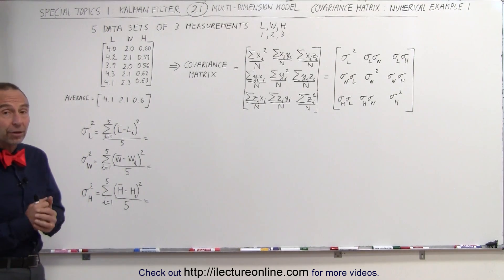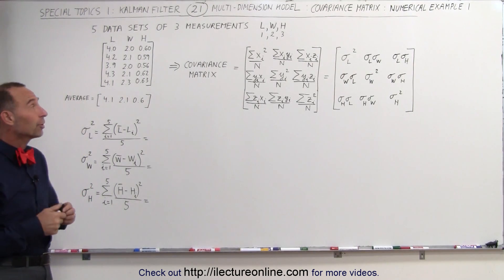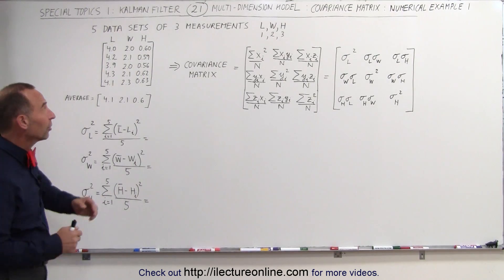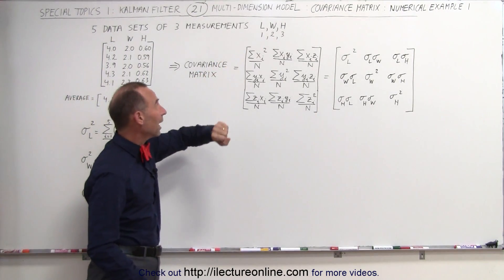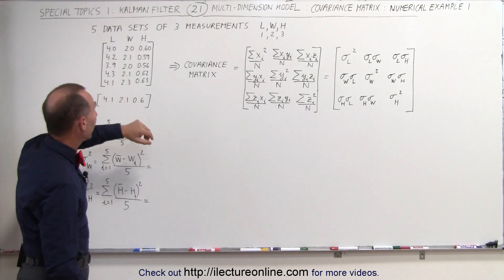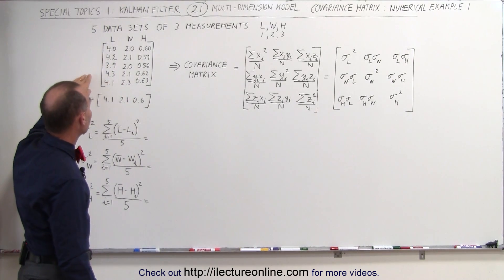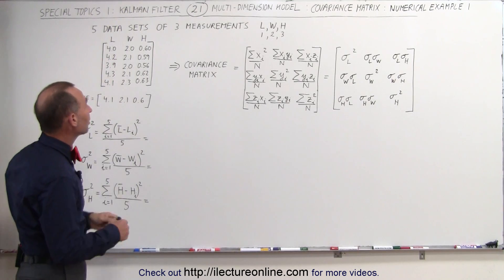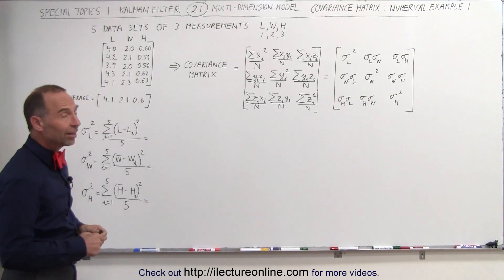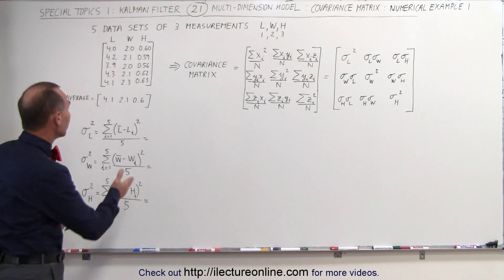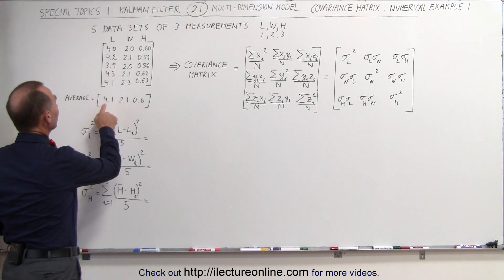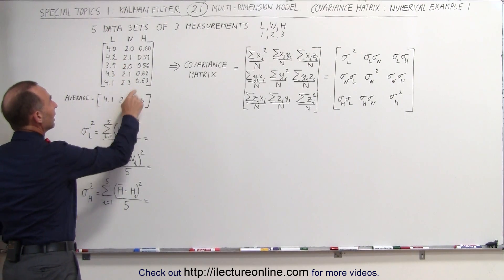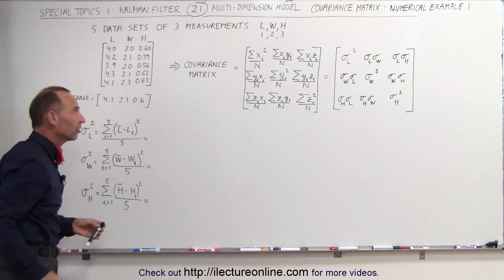Here's the first numerical example we're going to tackle. Let's say we're going to take some measurements of an object — we're going to measure the length, width, and height. We're going to take five measurements, so there are five data sets. Here's the matrix representing the five data sets. If we average each of the measurements, we get the average length to be 4.1, the average width to be 2.1, and the average height to be 0.6.